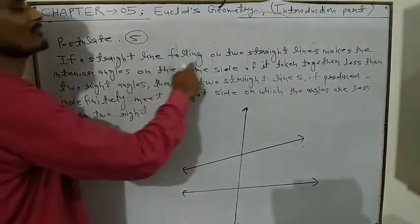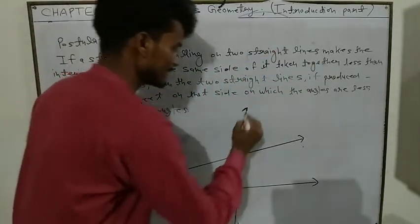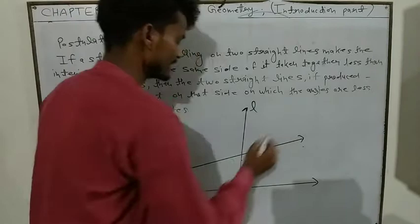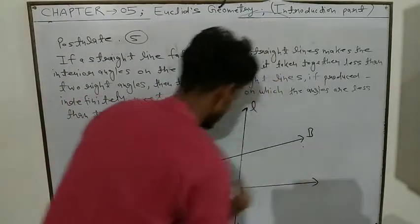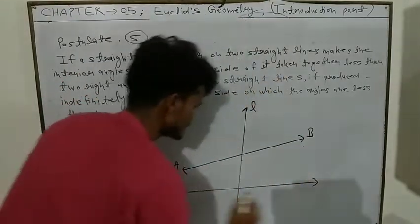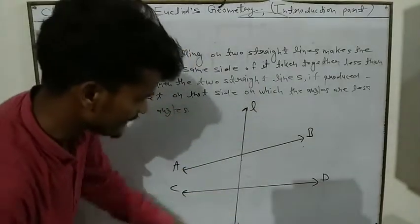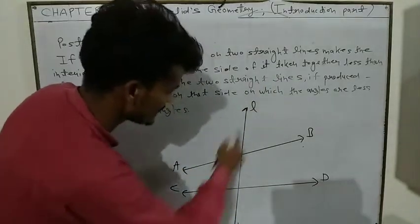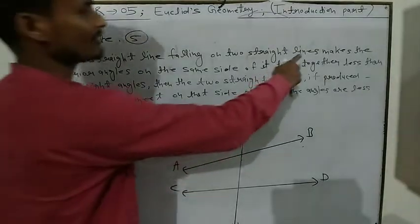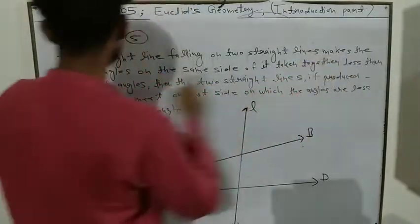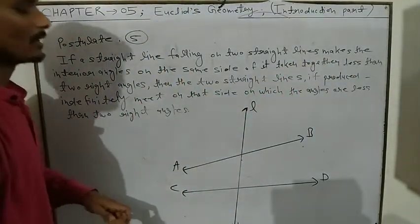If I have two straight lines — here I can take the straight lines, let's call them AB. Now if I have one straight line falling on two straight lines, it makes the interior angles on the same side.